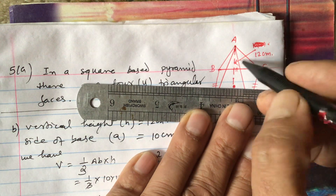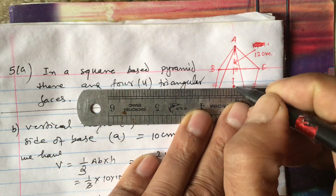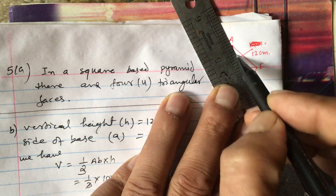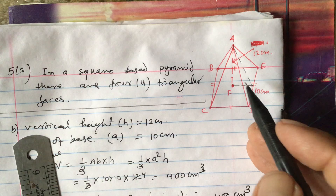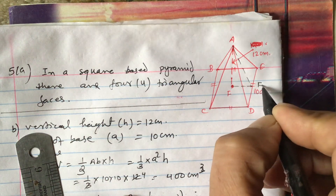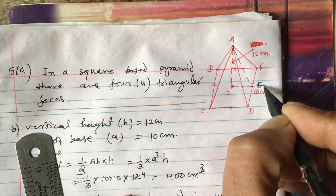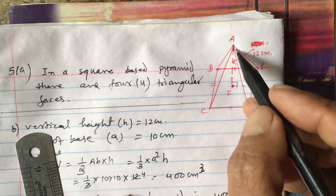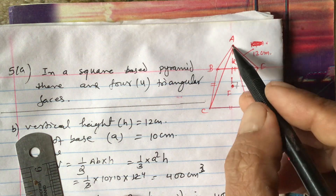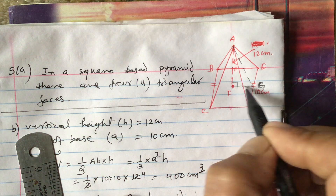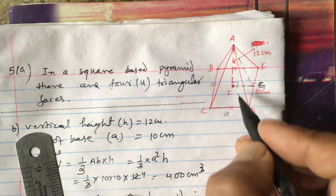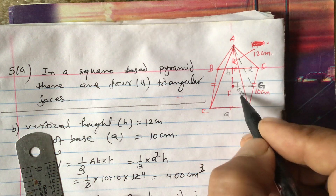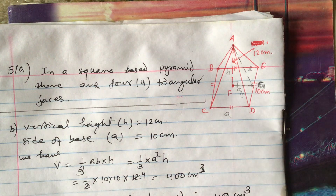We draw a line from the apex parallel to the side of the base to get the slant height. Joining apex A to midpoint F of the base edge gives us the slant height. In right triangle AGF, the slant height l is the hypotenuse, h is the perpendicular, and half of the base side, a over 2, is the base. So: l² = h² + (a/2)².